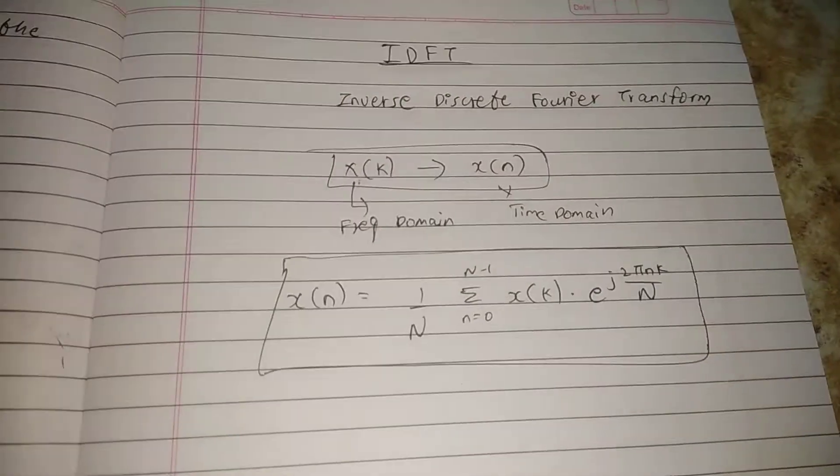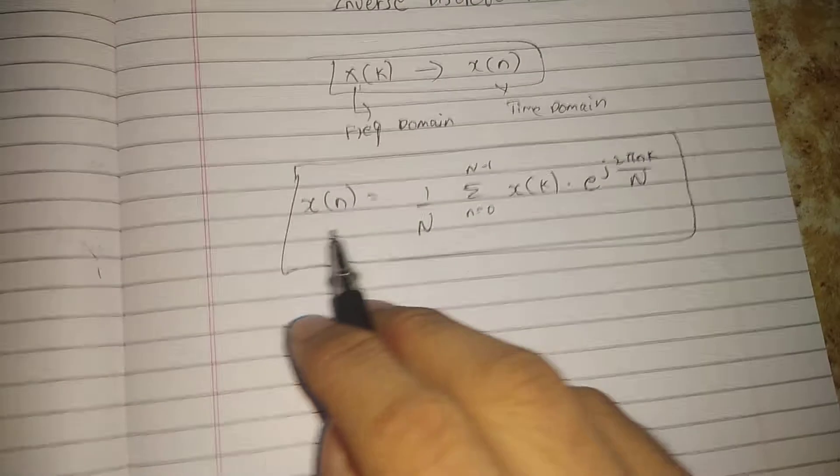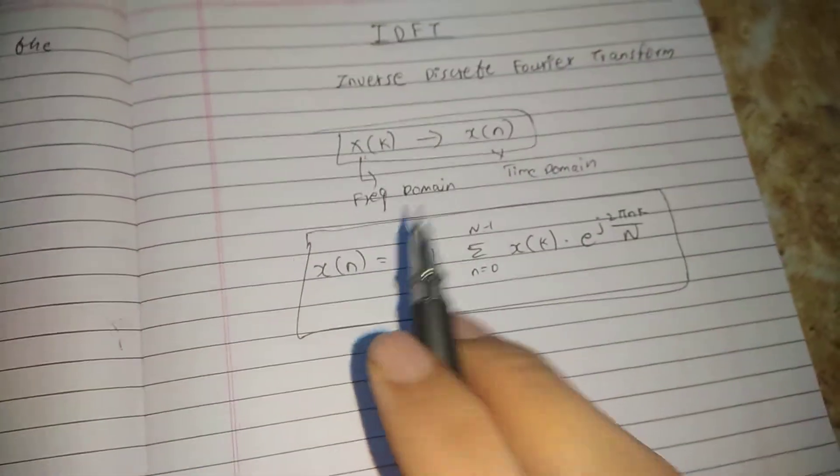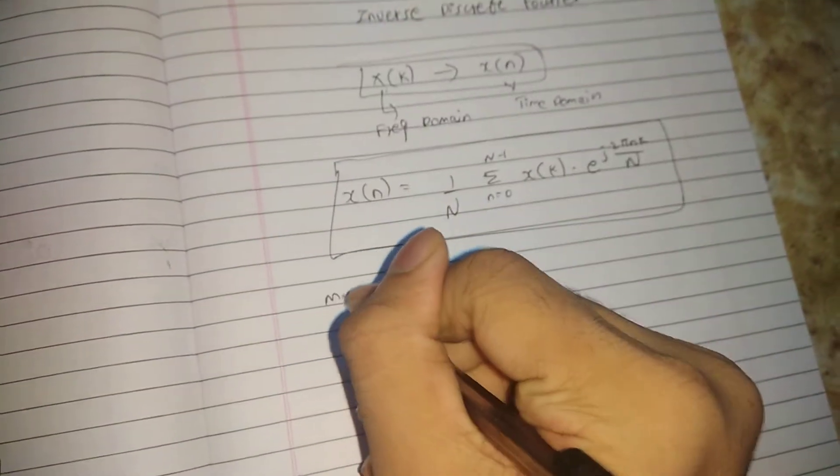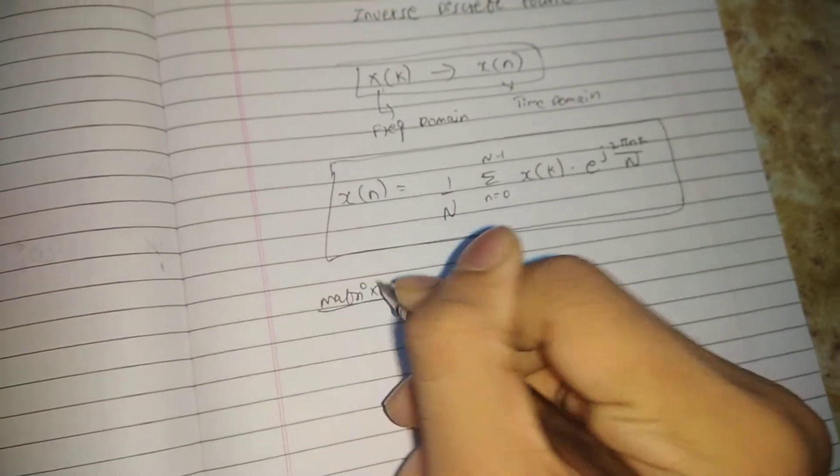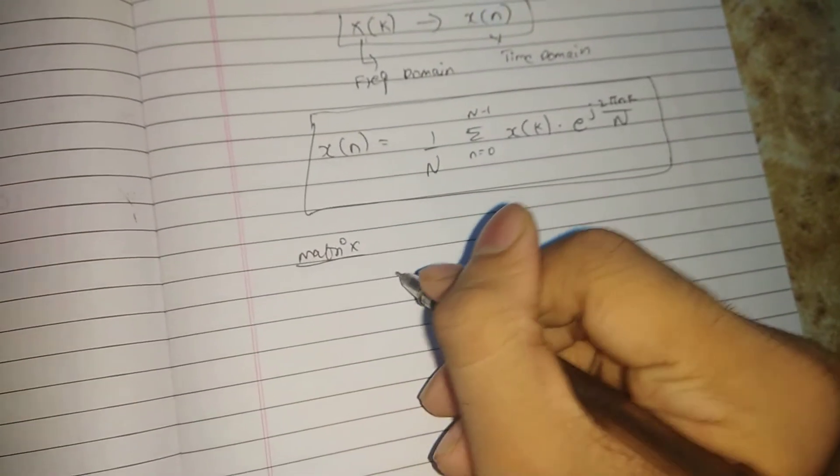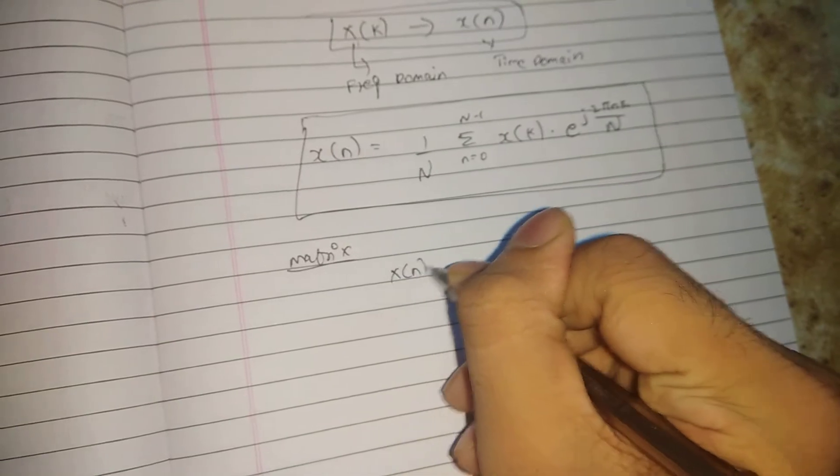IDFT is the short form. There are two methods to solve this. The second is the matrix method. In the matrix method, the formula is x(n) equals